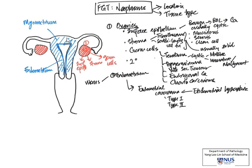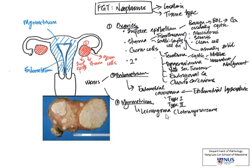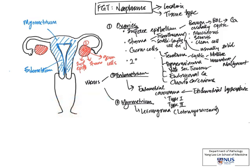The myometrium is also another potential source for neoplasms, and we know that this is composed primarily of smooth muscle tissue. So the main tumors that arise here would be smooth muscle in origin. Most often they would be benign — these are very common tumors known as leiomyomas, or in layman's terms as fibroids. The malignant counterparts would be called leiomyosarcoma.